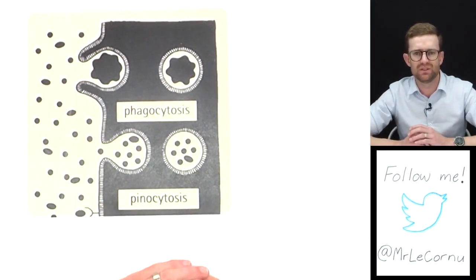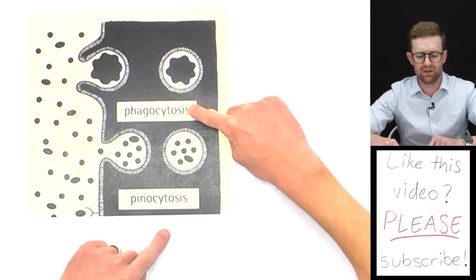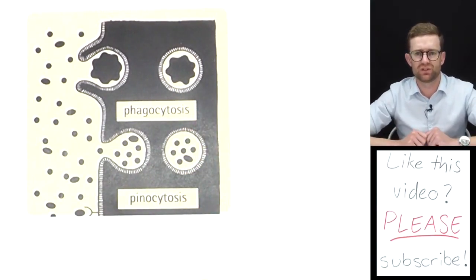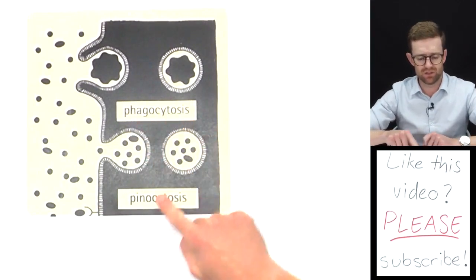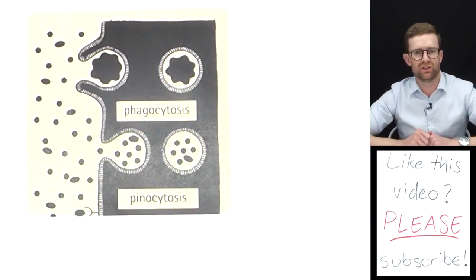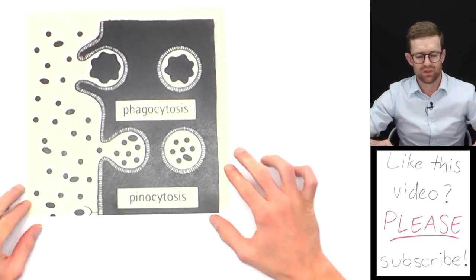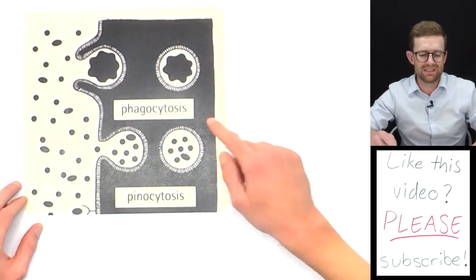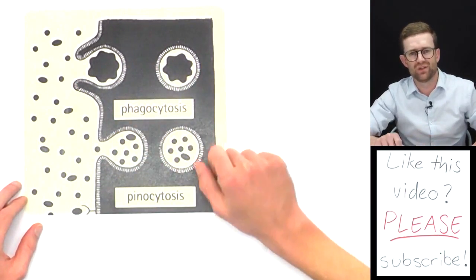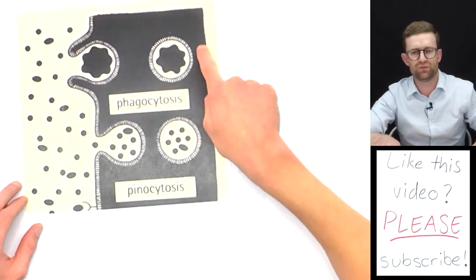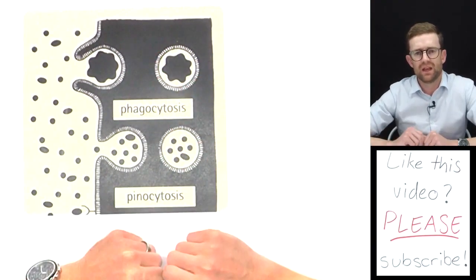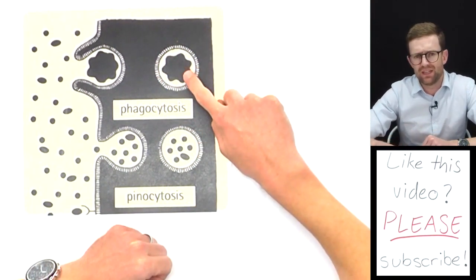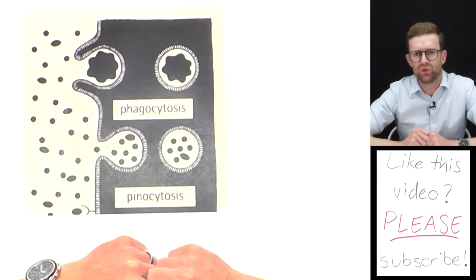So now that we understand the basic process of how endocytosis happens, it's just worth knowing that there are two different types of endocytosis: there's phagocytosis and pinocytosis. They're basically the same thing just depending on the size of the substance that's entering the cell. So for larger substances they enter via phagocytosis. When these large substances enter via phagocytosis, we end up with what's called a food vacuole.